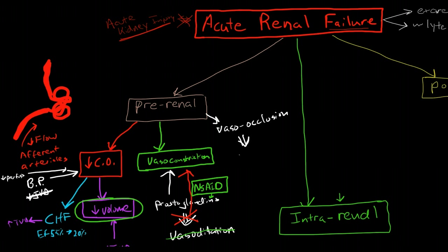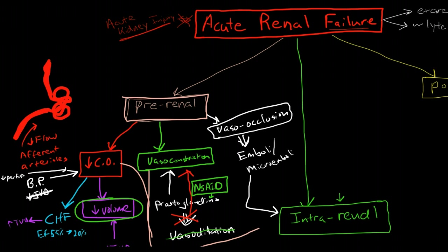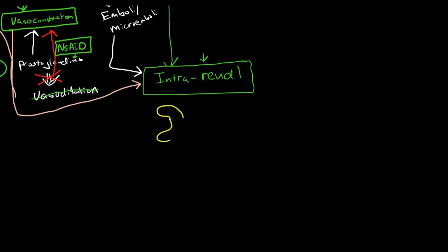The third cause of pre-renal acute renal failure is vasoocclusion, most frequently caused by emboli or arteriosclerosis of the arteries feeding the kidney. If emboli or microemboli are disrupting flow to many nephrons, you will have pre-renal failure causing intra-renal failure due to ischemia and necrosis. Decreased cardiac output and vasoconstriction, if severe enough, can do the same thing — decreasing blood flow through the afferent arterioles to a level that actually causes damage to the nephron itself.